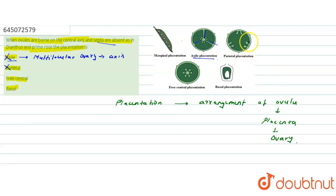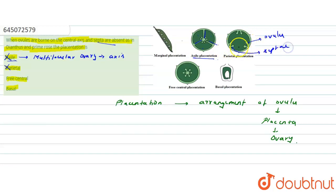The next option is parietal placentation, which is also incorrect. Here the placenta is present at the periphery, with ovules on the periphery, and septa are present and attached to the inside layer. So this option is also incorrect because septa are attached to the inner wall.